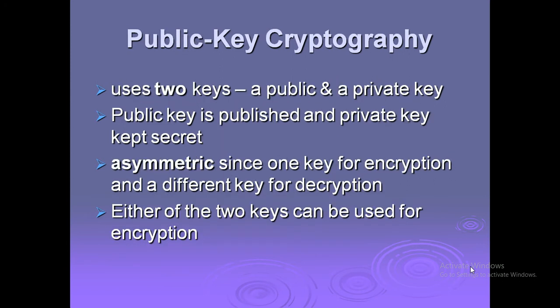Public key cryptography uses two keys: a private key and a public key. The public key is published to others and the private key is kept secret. It is asymmetric since one key is used for encryption and a different key is used for decryption. Either of the two keys can be used for encryption.